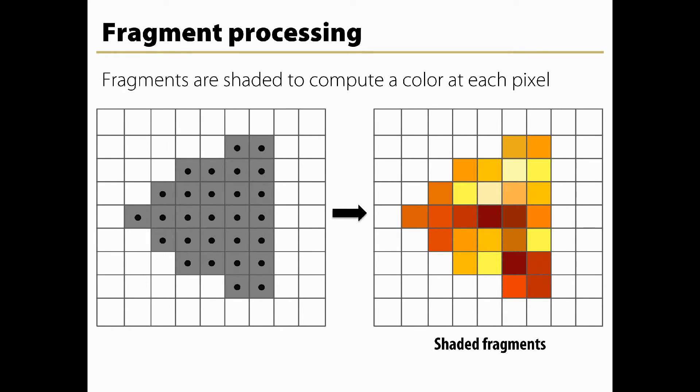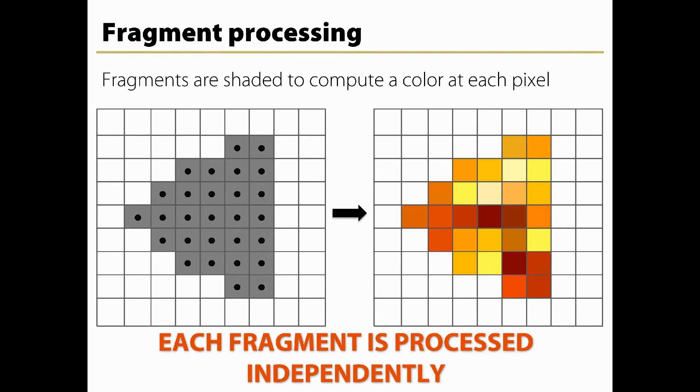The data for each fragment from the rasterization stage is processed by a fragment shader. The output from a fragment shader is a list of colors for each of the color buffers being written to, a depth value, and a stencil value. Fragment shaders are not able to set the stencil data for a fragment, but they do have control over the color and depth values. Fragment shaders are optional.